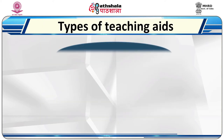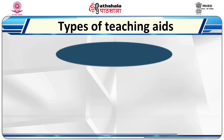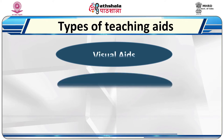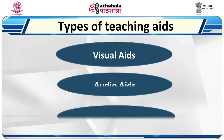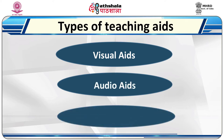Audio aids are those that involve the sense of hearing — musical instruments, radio, tape recorder and so on are in this category. Audio-visual aids involve both the sense of vision as well as hearing, such as puppets, television, film, projector, film strips and so on.